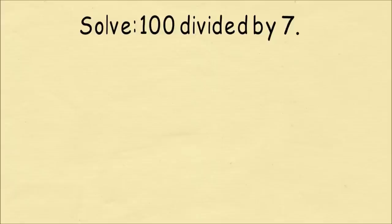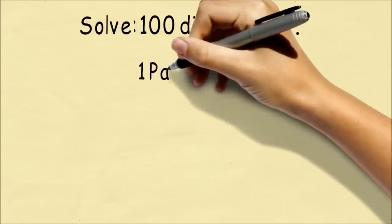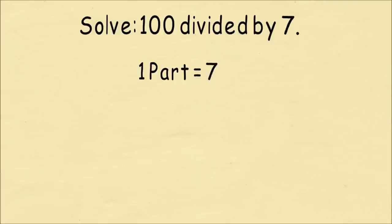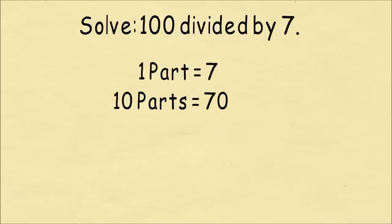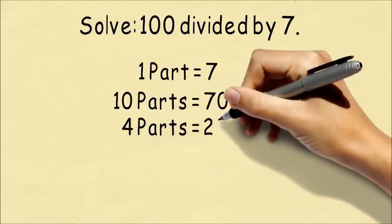We're going to count up multiples of 7 until we get to 100. So we start out that 1 part is equal to 7. We can clearly jump to 10 parts, which will be 70. We're still short by about 30. So we can add 4 parts of 7, which is 28.